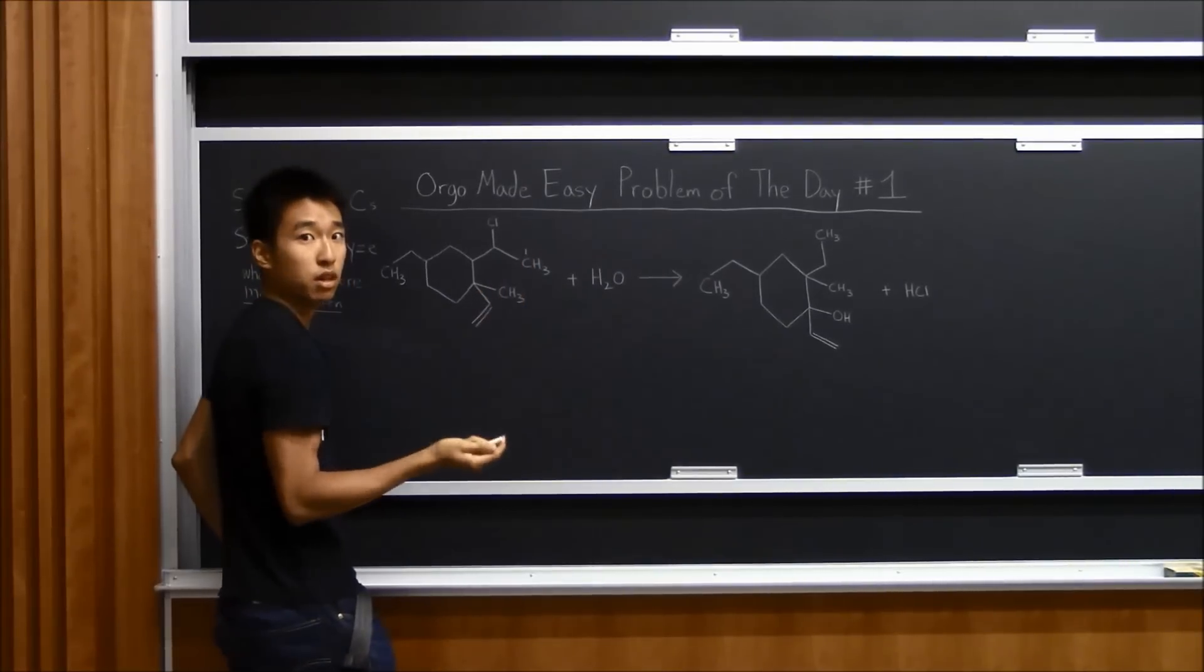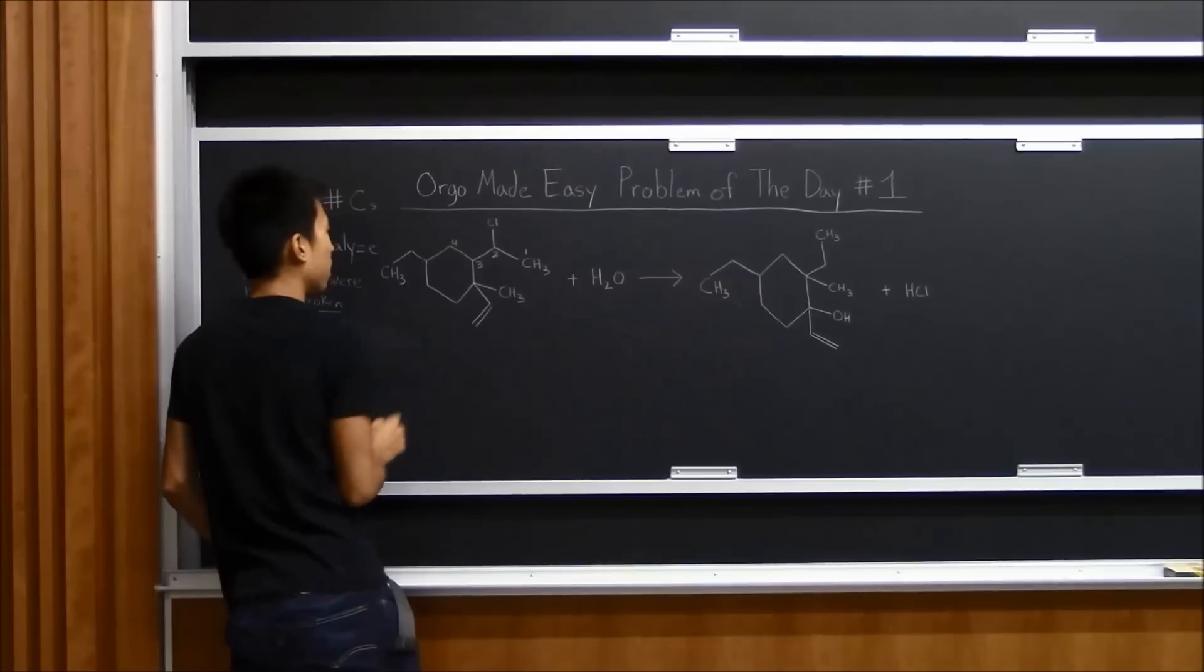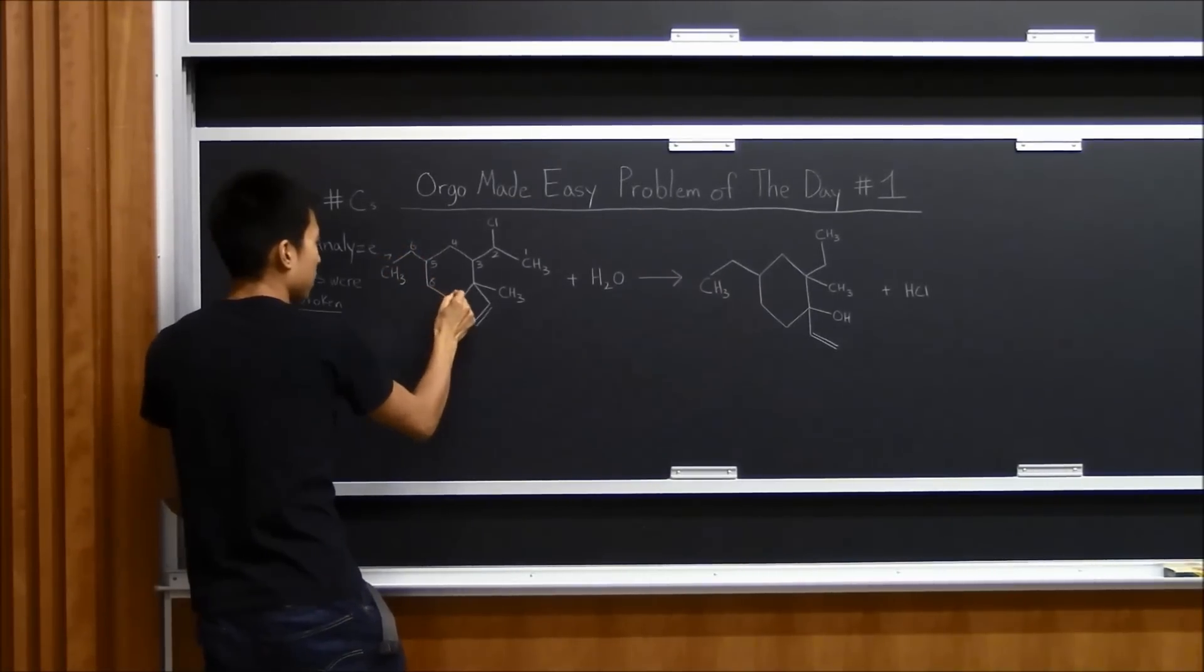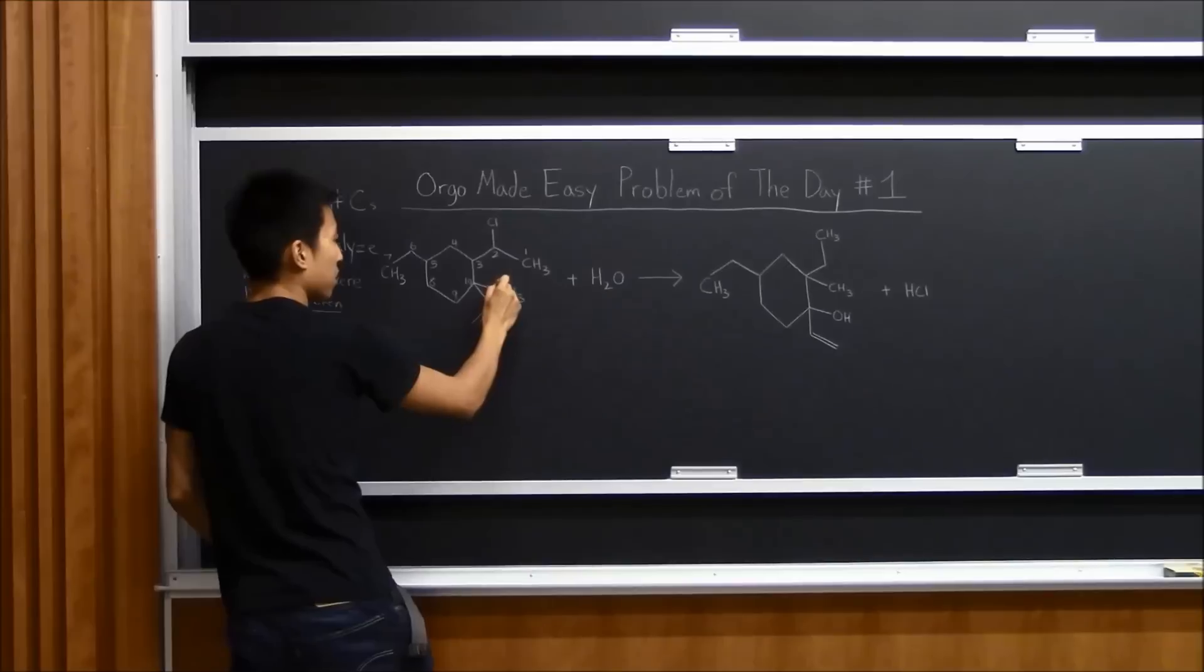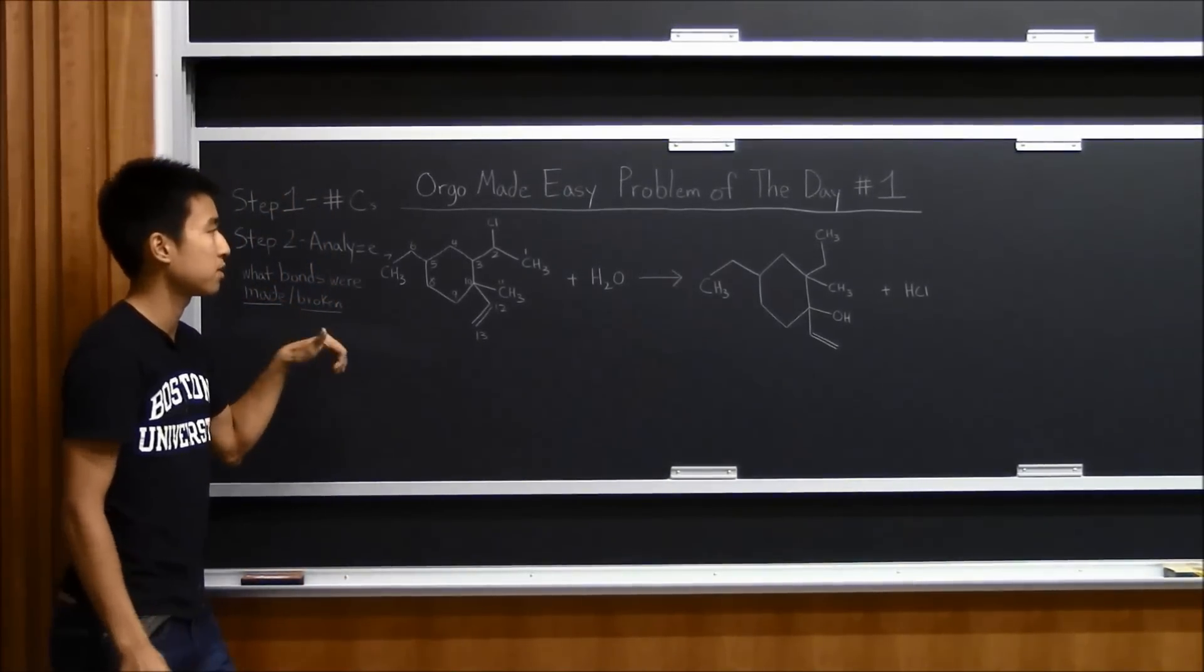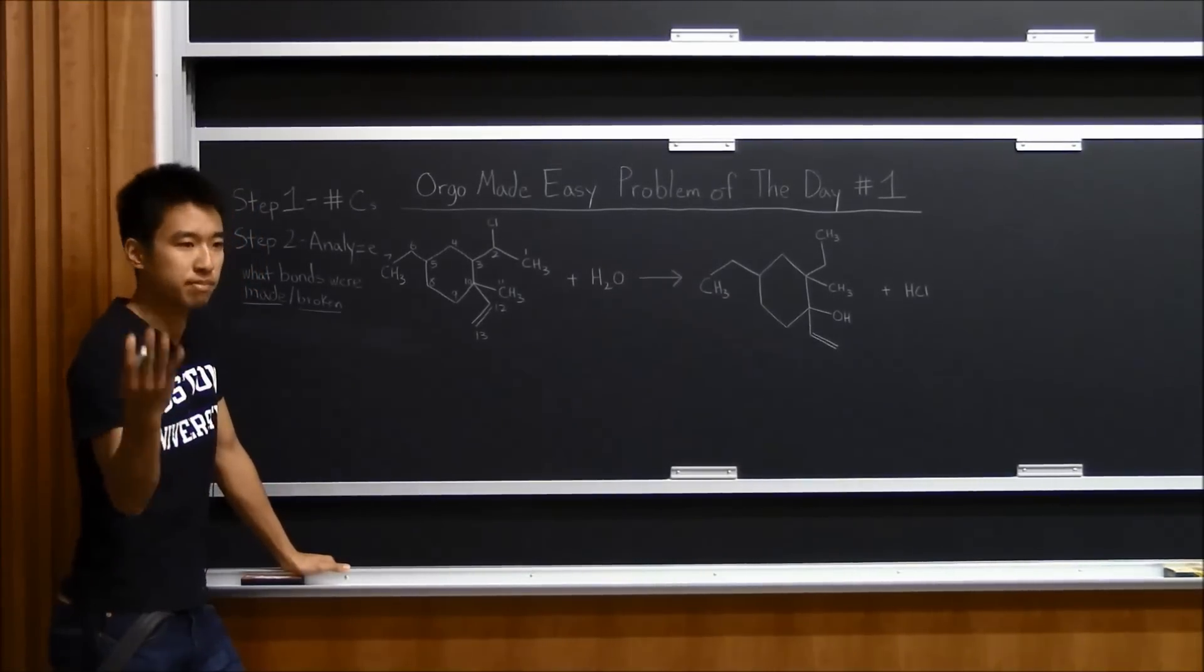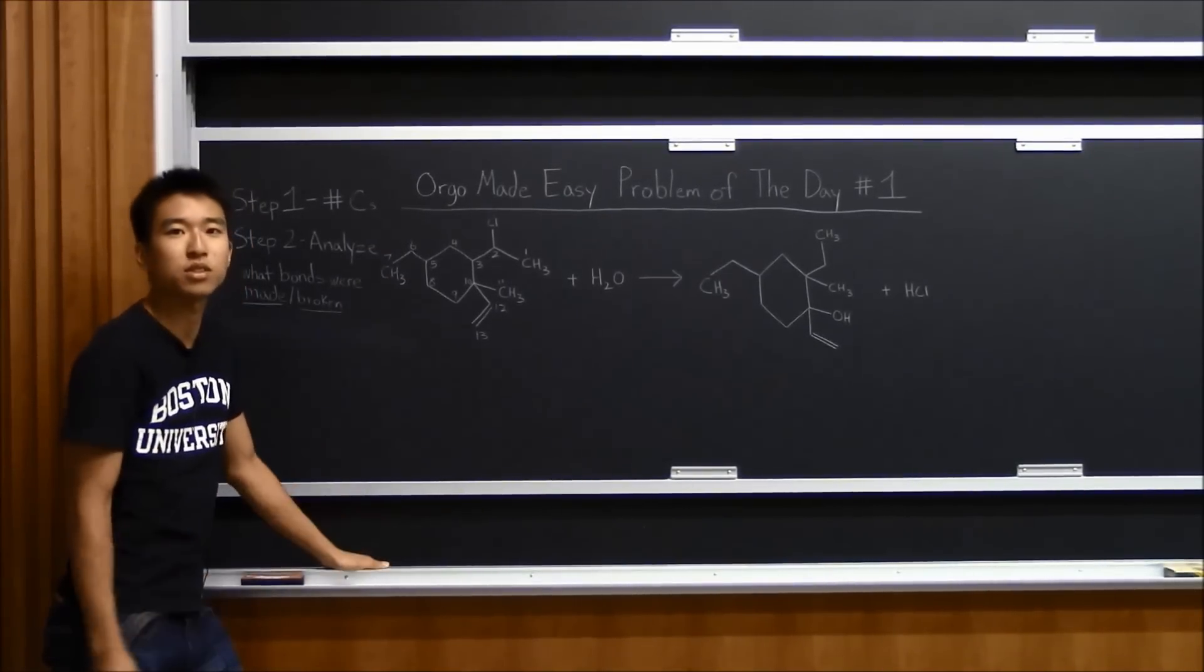So this methyl group, I'll label it carbon number one. This will be two, three, four, five, six, seven, eight, nine, ten. And then we have a branching point here and it doesn't really matter because you can label this eleven, twelve, and thirteen. Now, it really doesn't matter how you number your carbons, but for the purposes of this video, it's probably best if you number it how I number it, just so it will make sense when I explain it. But as long as you number all your carbons and you're consistent, you should be fine.